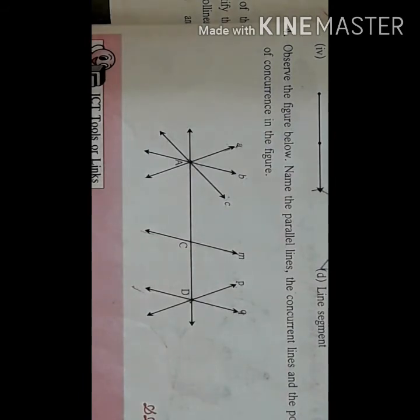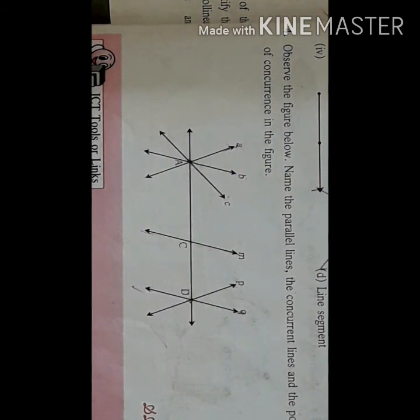For notation: for a point write 'point', for a segment write 'segment' (short form: SEG), and for a line write 'line'. Hope you understood. If there are any queries, please mention in the comment box. Thank you.